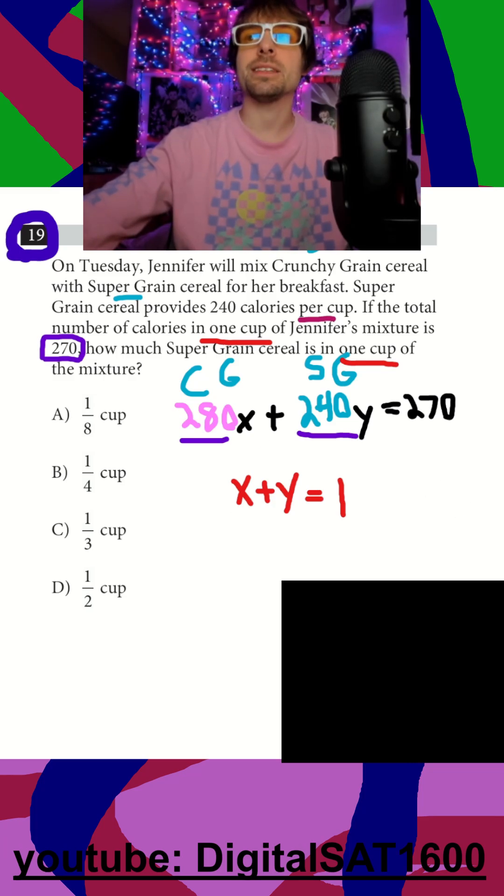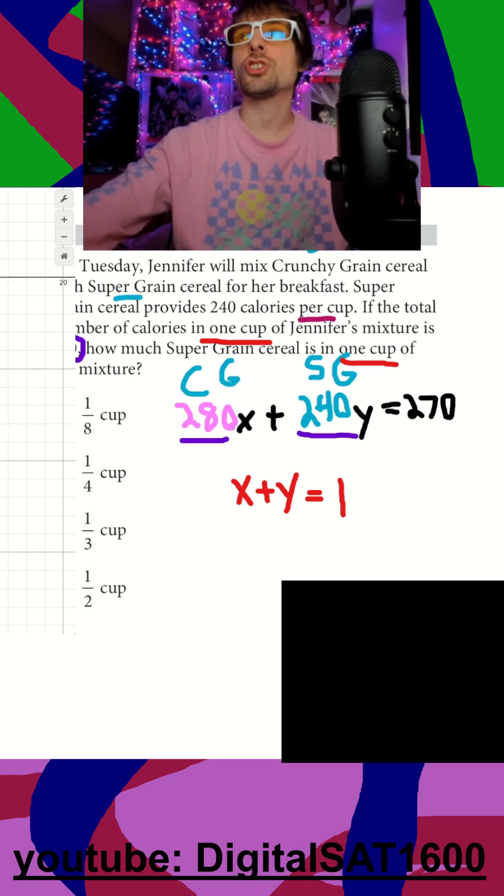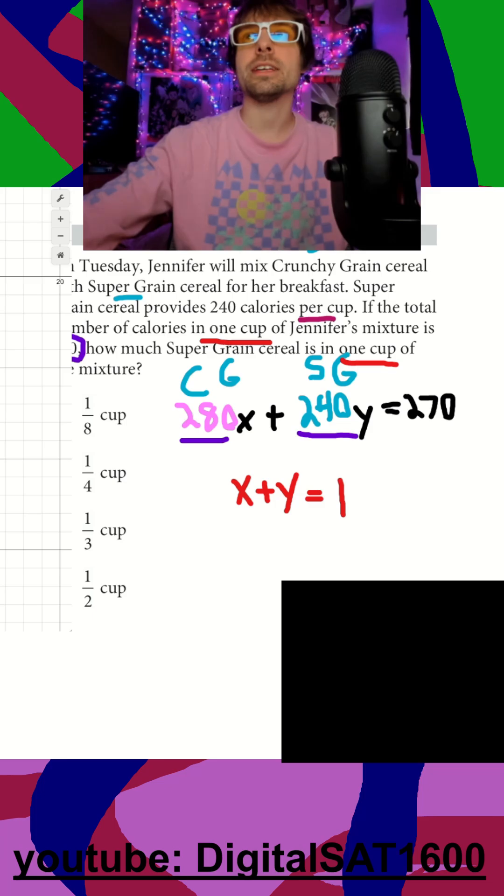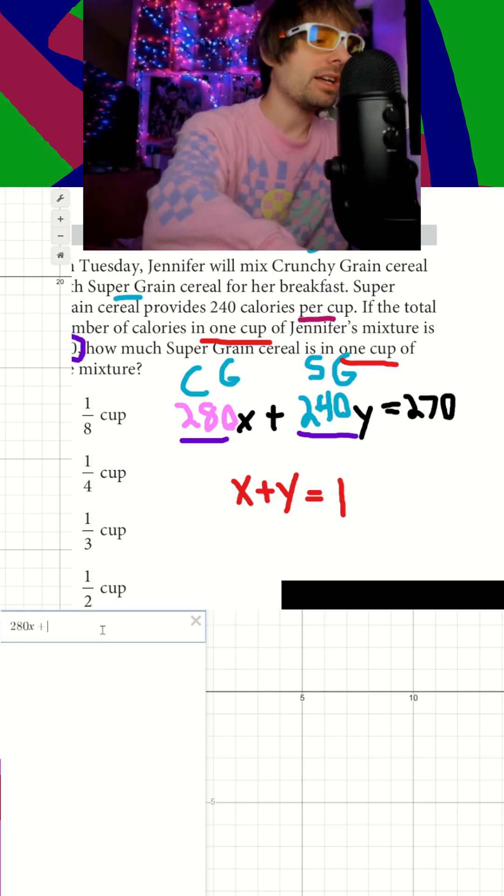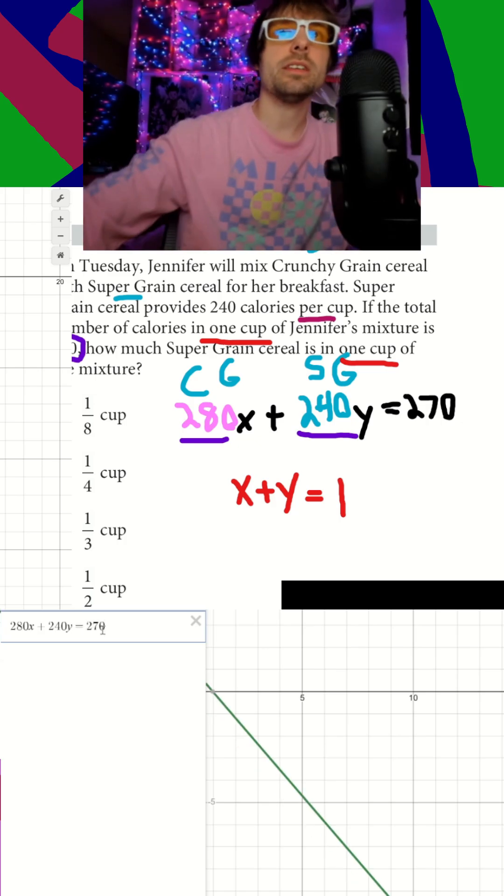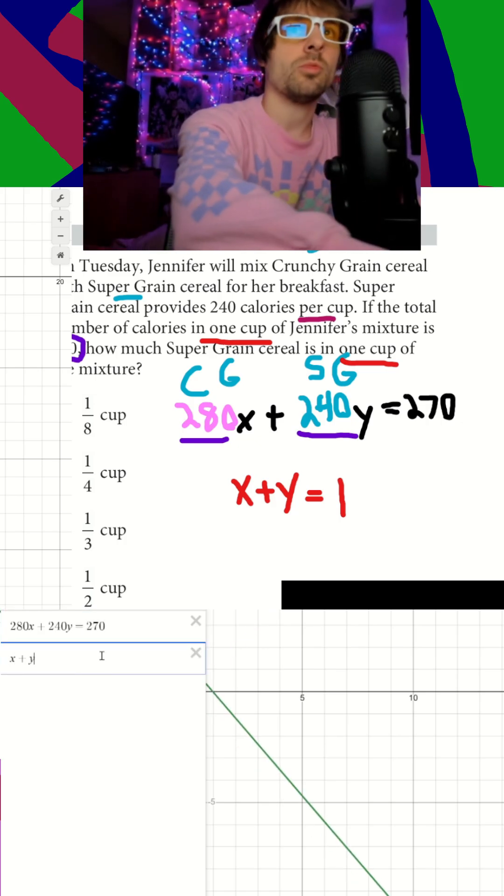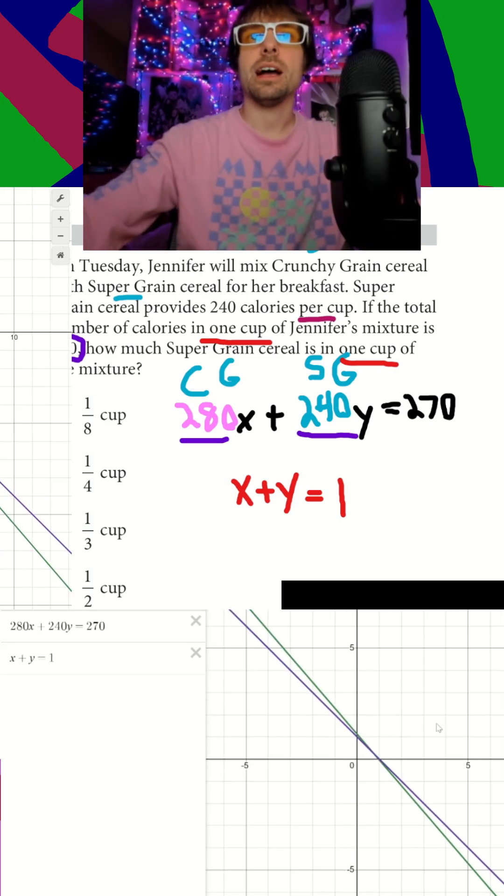These are my two equations. If I plug these in decimals, it should give me what my X and my Y are equal to. So my first equation, 280X plus 240Y is equal to 270, and my second equation, X plus Y is equal to 1.